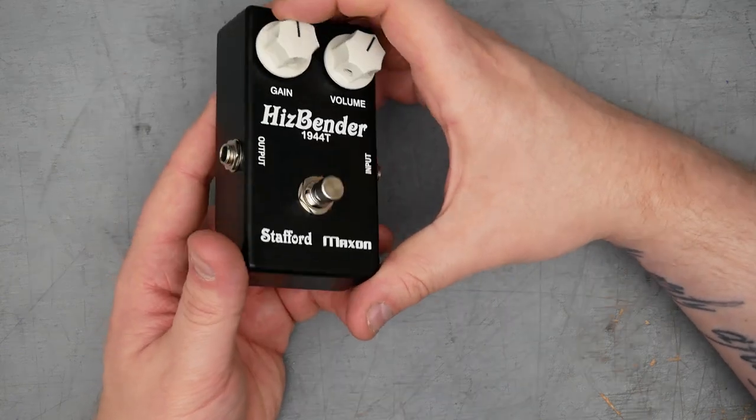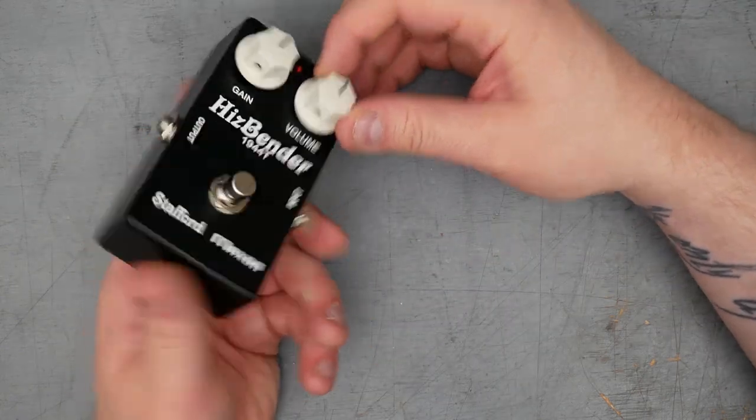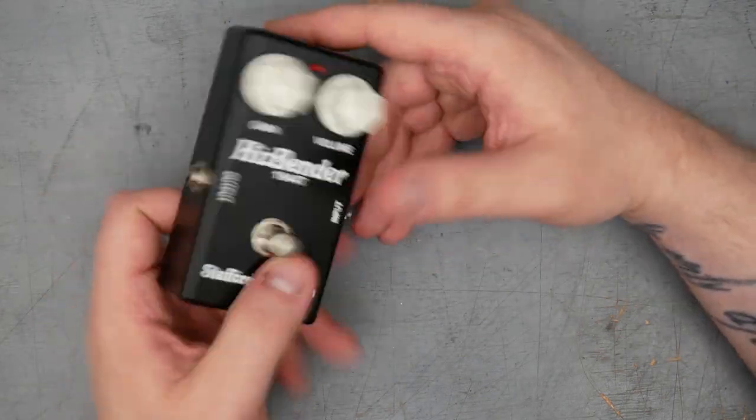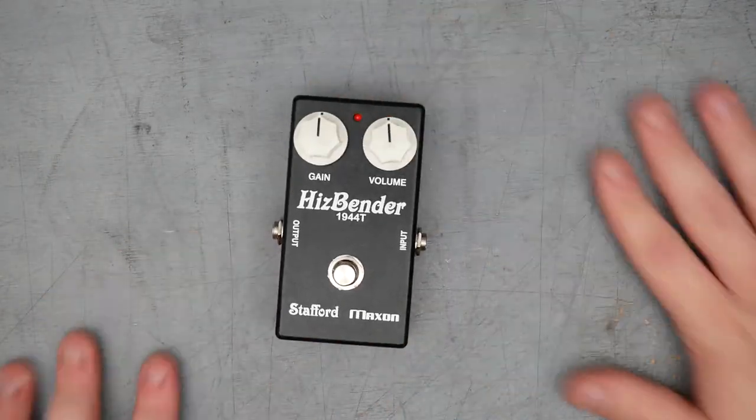The knobs are what I would call MXR style knobs. And interestingly, the set screw is a hex key. So that's pretty much it for the externals. Let's go ahead and crack open the pedal.